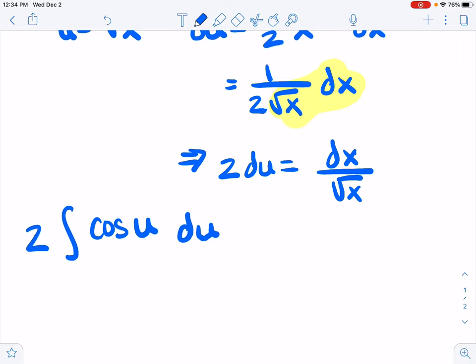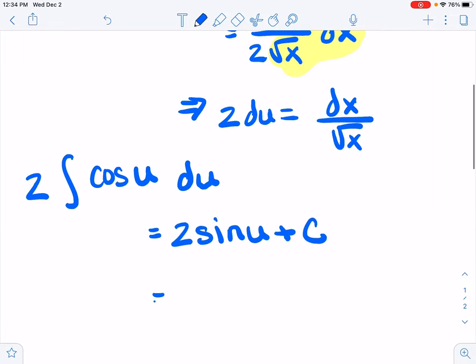2 times the integral of the cosine of u du. The antiderivative of cosine is sine, so we have 2 sine u plus c. So 2 times the sine of the square root of x plus c is our antiderivative by the method of substitution.